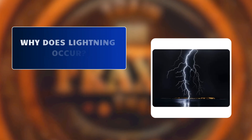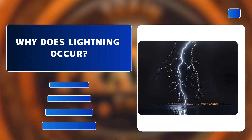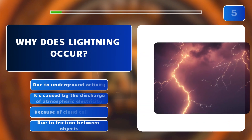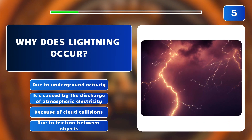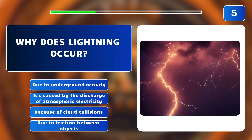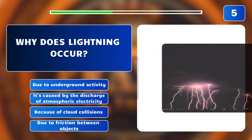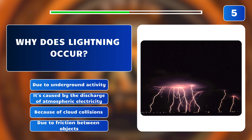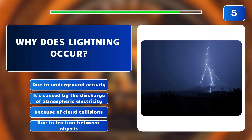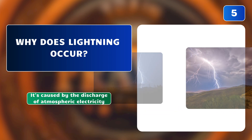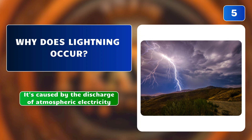Why does lightning occur? Due to underground activity, because of cloud collisions, due to friction between objects, or is it caused by the discharge of atmospheric electricity? The answer is: it's caused by the discharge of atmospheric electricity.